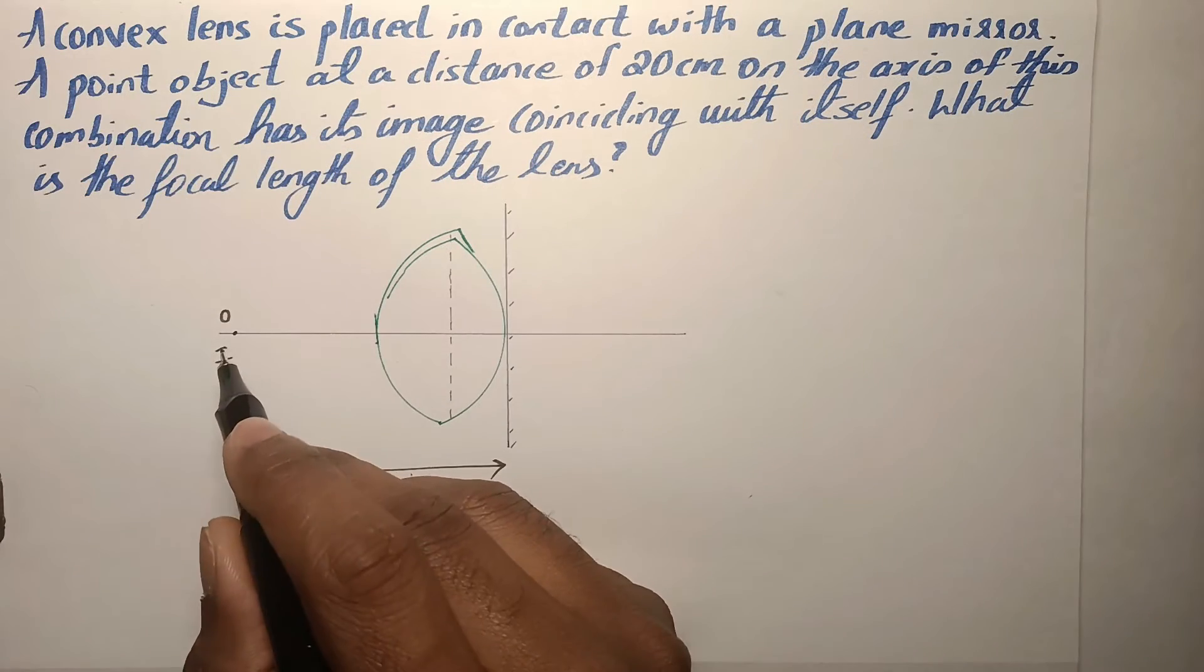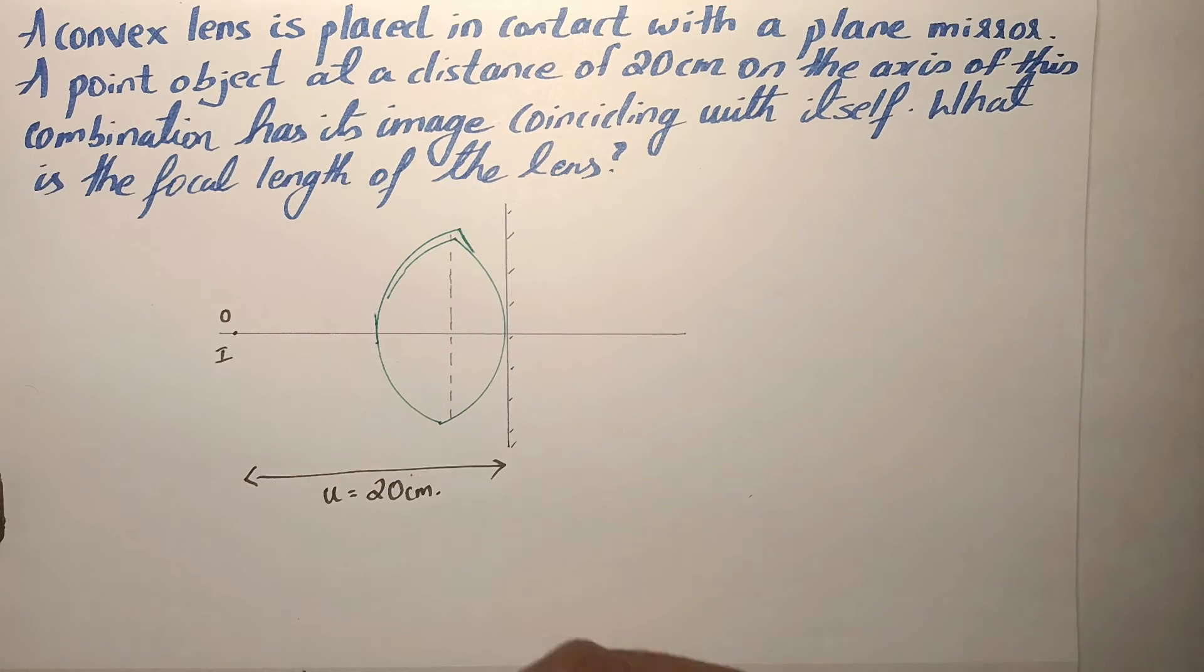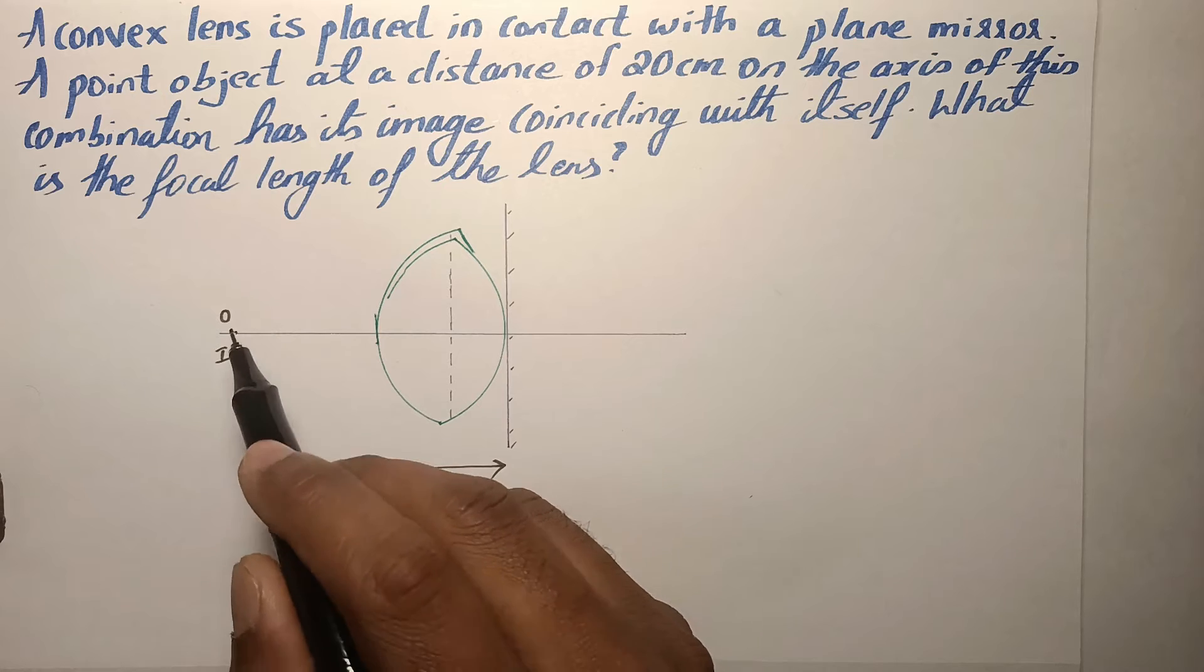What is the focal length of the lens? So let us see how this condition is possible, that is, object and image coinciding with each other.